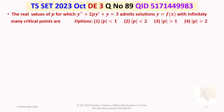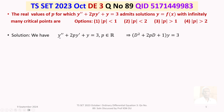Let us now discuss the solution in detail. We have the given second-order non-homogeneous linear differential equation y'' + 2py' + y = 3, where p is a real number. Writing it in operator notation, where capital D stands for d/dx, the equation becomes (D² + 2pD + 1)y = 3.